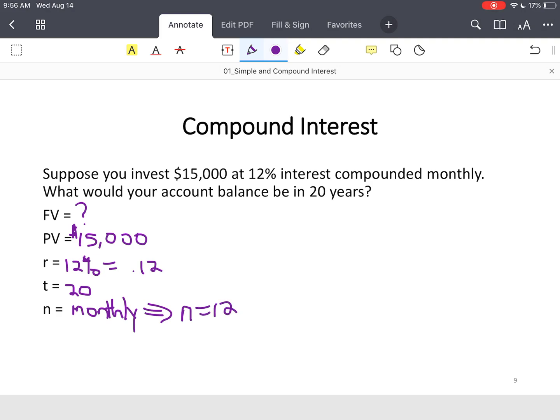All right, so now the formula. Future value equals present value times 1 plus R divided by N raised to a power of N times T. You've got everything you need, so let's step through this. We don't know future value. We do have $15,000 today. One plus the interest rate is 0.12 divided by compounding periods, which is 12, close parentheses. Your exponent is 12 compounding periods times 20 years, close parentheses.